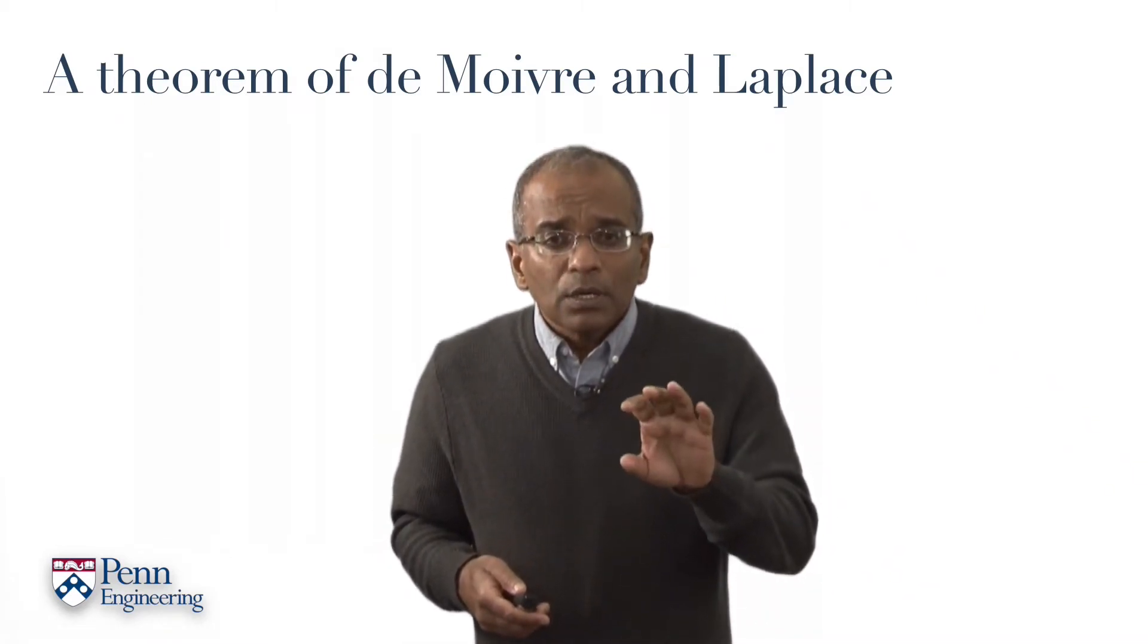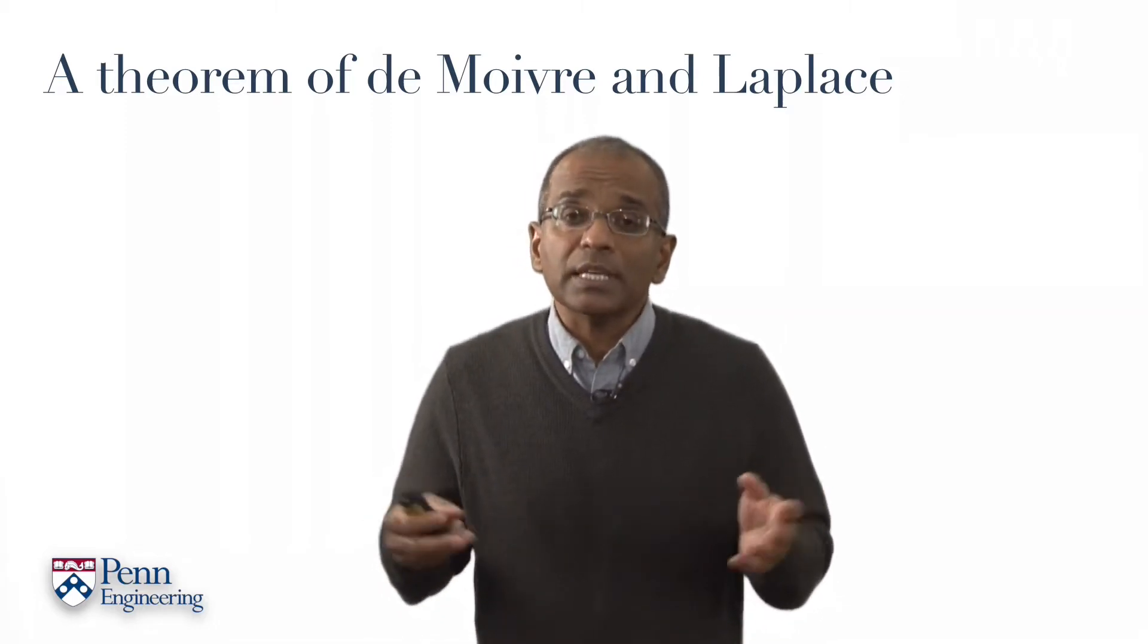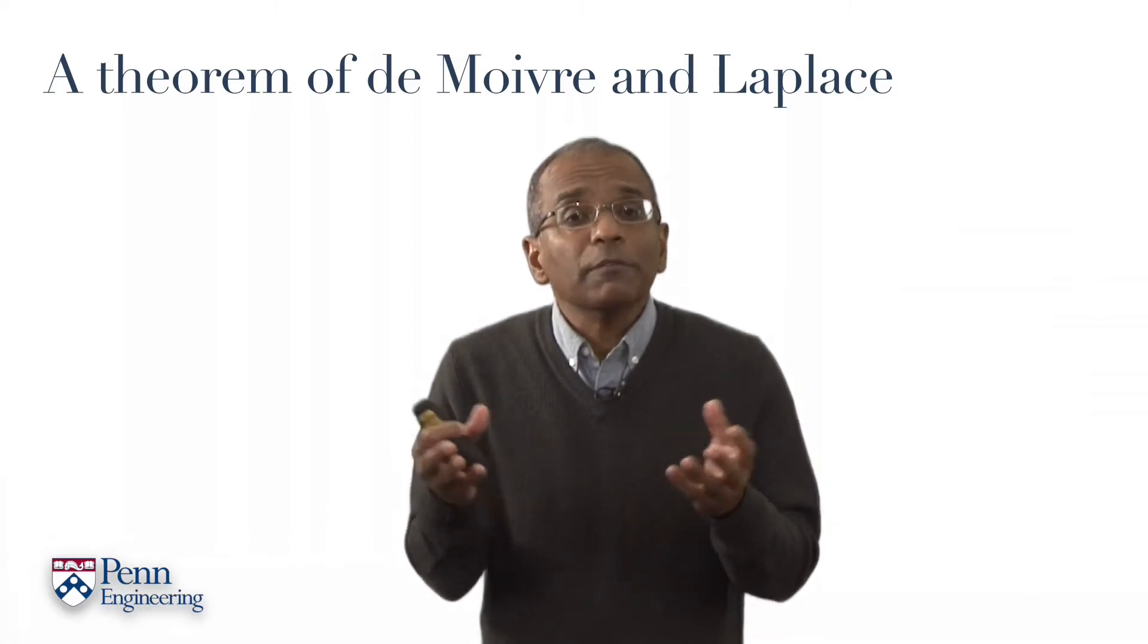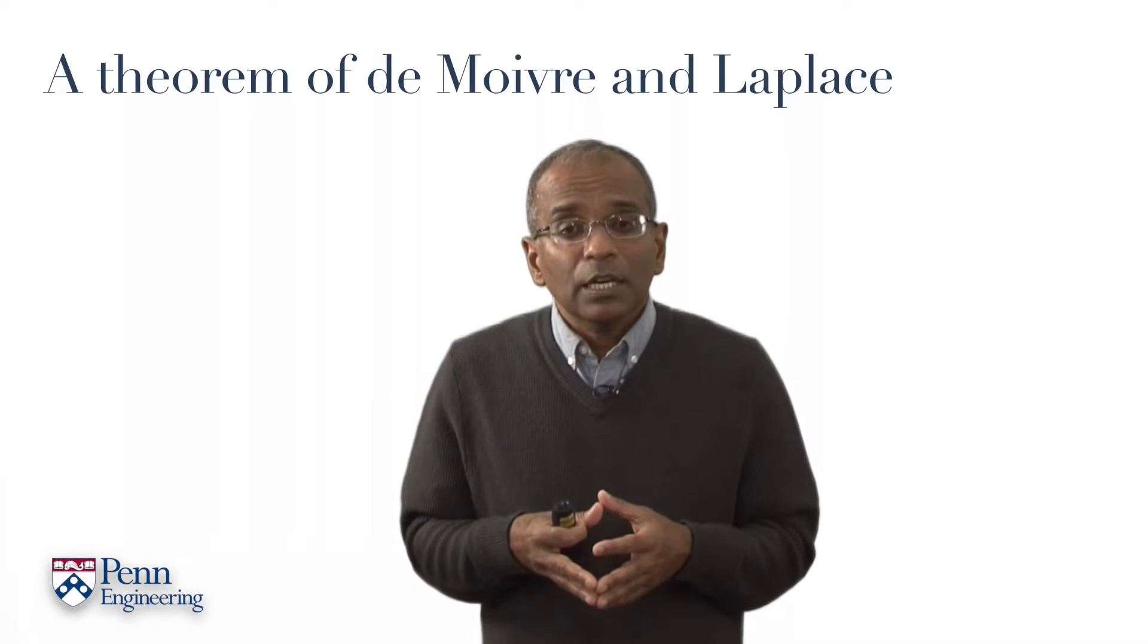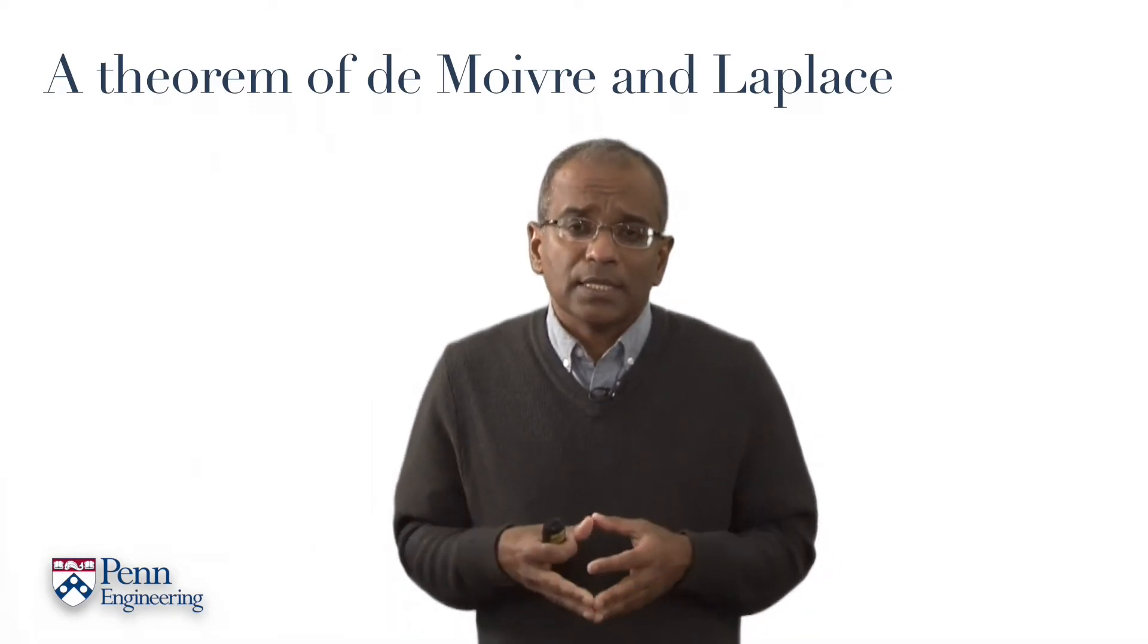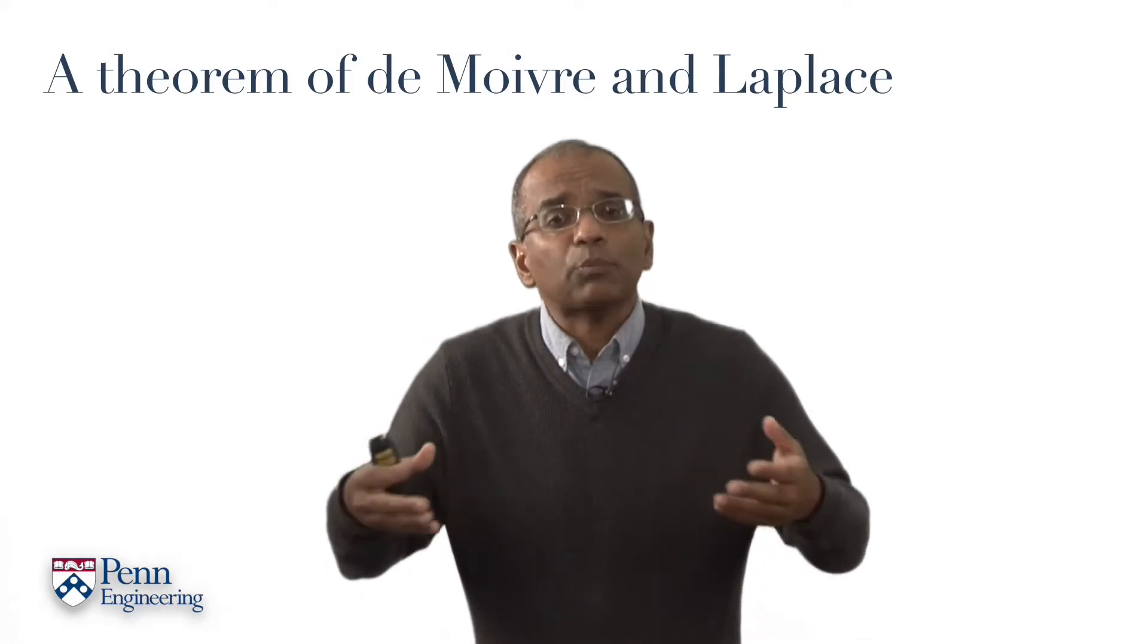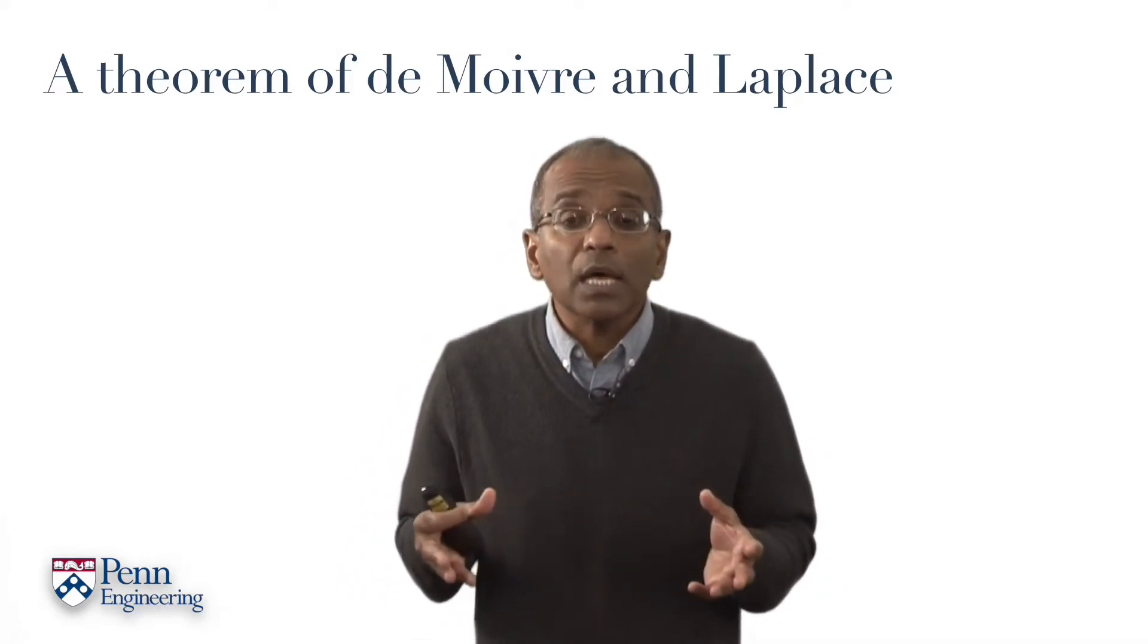De Moivre wrote about the normal approximation to the binomial in 1733. De Moivre worked with a fair coin, P equals one half. It took a full 80 years before the idea was generalized and the next step was taken, and this was taken by Pierre Simon, Marquis de Laplace.